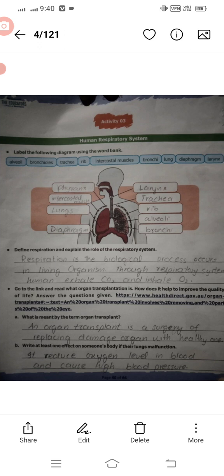Activity number three is about the human respiratory system. Label the following diagram using the word bank provided. Many words are given in the word bank. First, observe the diagram carefully and then fill in the labels in the correct sequence — do not just fill them in randomly.